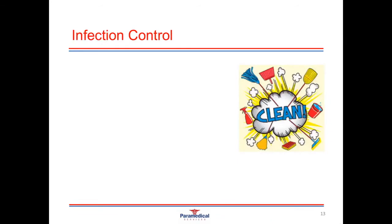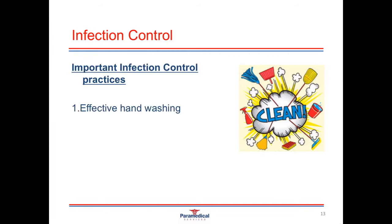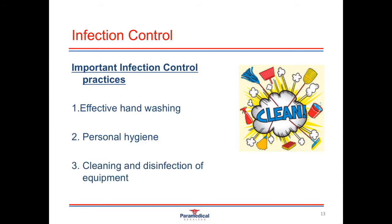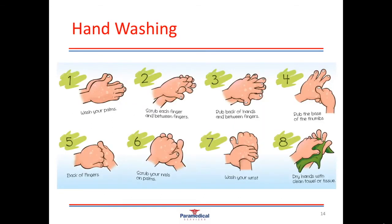Infection control practices are very important for breaking the chain of disease spread. Important practices include effective hand washing, personal hygiene, and cleaning and disinfecting equipment. As medical practitioners, we come into contact with many different patients — some highly infectious, others immunocompromised — so it's essential we don't aid transmission. We must wash hands before and after contact with every single patient, using soap, running water, and disposable towels.